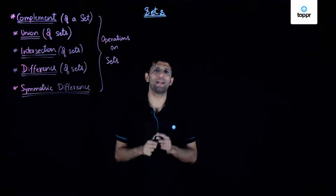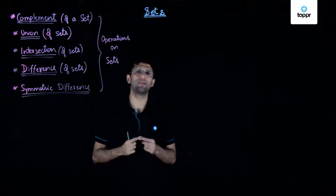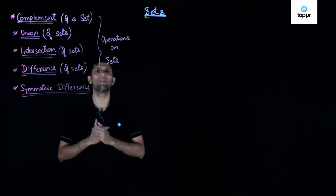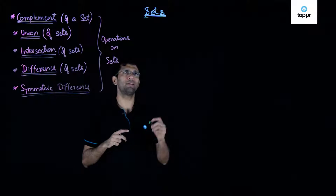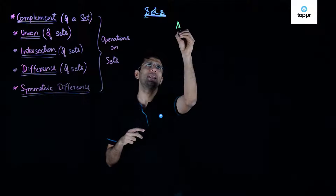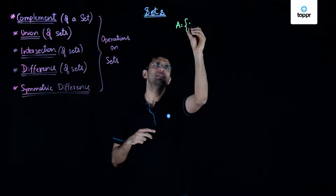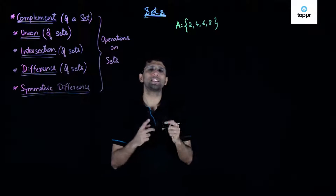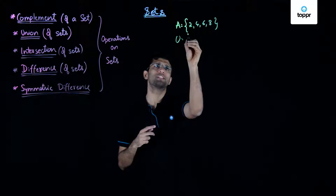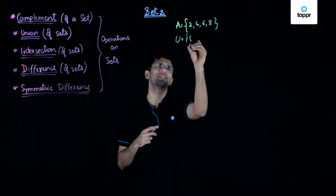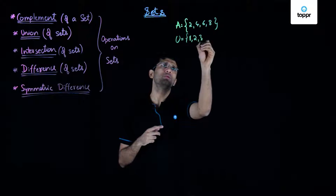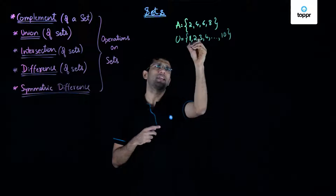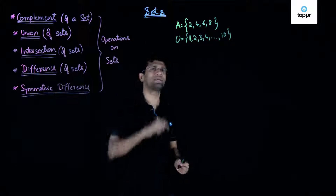Complement of a set is a set formed by those elements that are present in the universal set but not in the set that we are taking the complement of. In other words, if we have a set A having the elements 2, 4, 6, and 8, and suppose we have been given the universal set as containing the elements 1 through 10, then we can now find the complement of this set A.